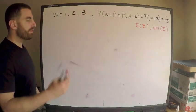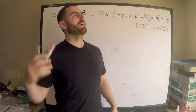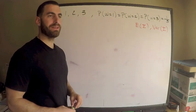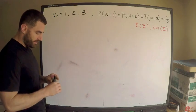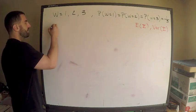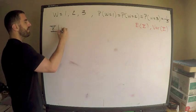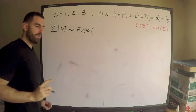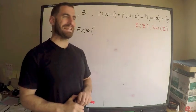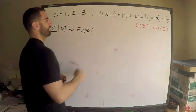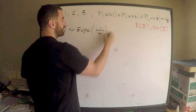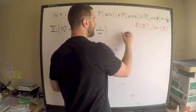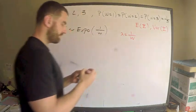There's one other detail: the conditional distribution of Y given W is exponential with mean W. In symbols, Y given W is distributed exponential. Be careful here — usually I put lambda, but with mean W, that means lambda is actually one over W. So lambda equals one over W — that's what this means.